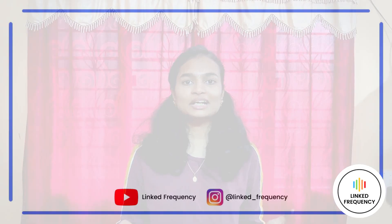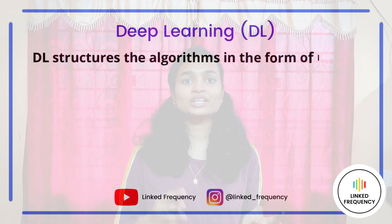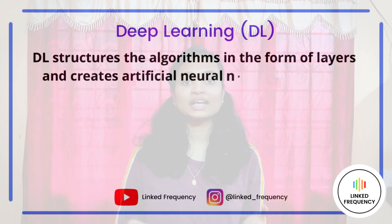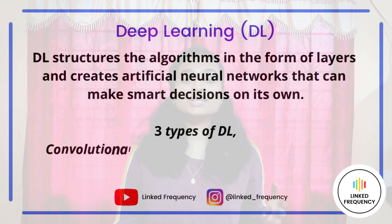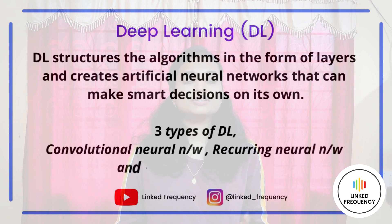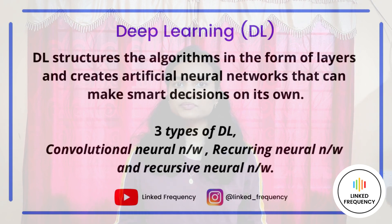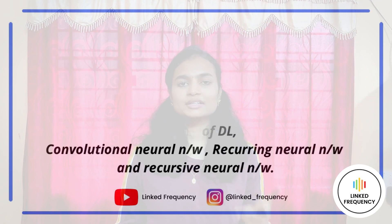Deep learning structures algorithms in the form of layers and creates artificial neural networks that can learn and make smart decisions on their own. Based on the number of layers, deep learning is divided into different architectures: convolutional neural networks, recurrent neural networks, and recursive neural networks. Since a large amount of data is used in deep learning, it is highly efficient and also highly ranked in terms of accuracy.